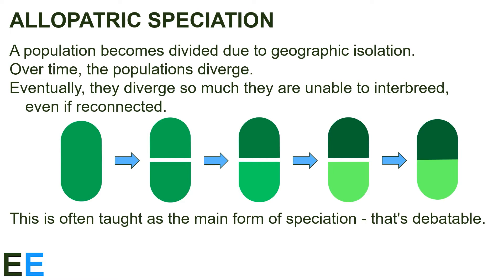The diagram illustrates this process. We start with one population where all the individuals are similar, and then it gets split into two. Over time, they diverge — represented by one becoming lighter in color and the other becoming darker. Later, if the populations are reconnected, these differences may be so large that the two populations don't interbreed and there are now two distinct species. Speciation has occurred. This is often thought of as the main form of speciation, though that's debatable — professional evolutionary biologists debate which mode is most common. This is certainly the mode taught most in introductory biology courses because it's the easiest to understand.